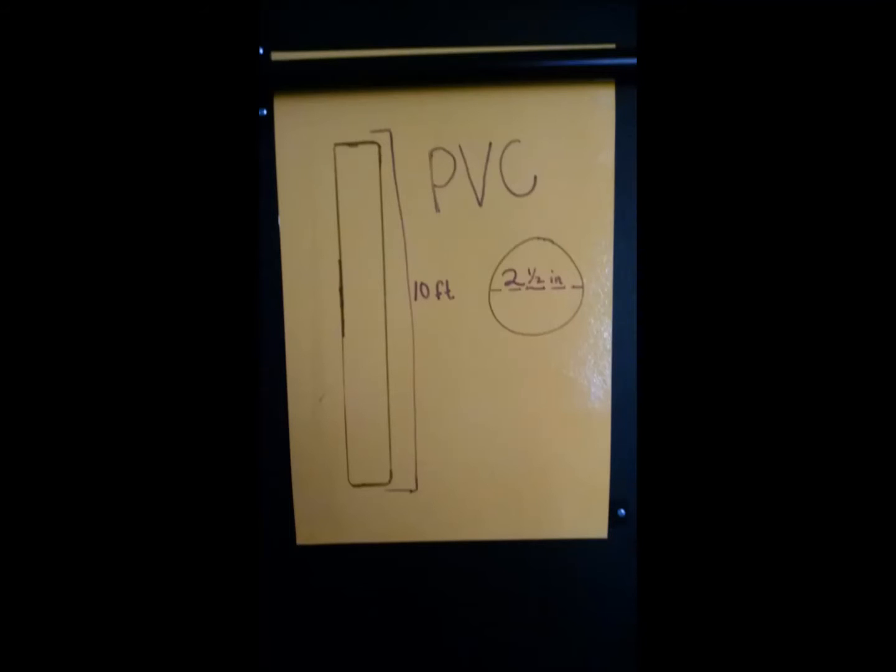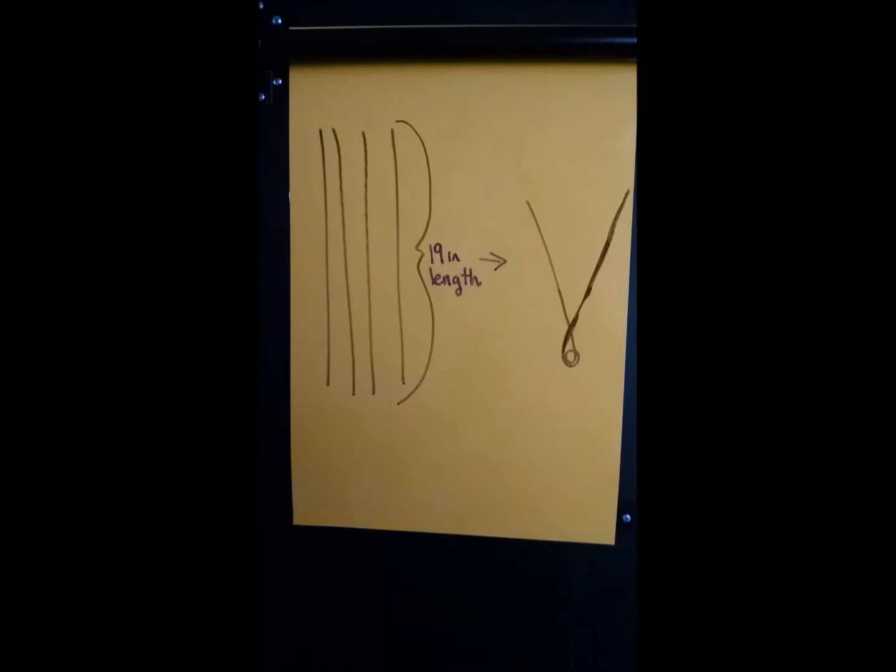The length of the PVC pipe truly depends on how much space you have available, and same goes for the number of strips of galvanized wire and the screws, but you want to have at least four of those for it to work properly. For this example, we're going to use a 10-foot PVC pipe with a 2.5 inch diameter, and we're going to use 24 strips of 19-inch length galvanized wires.